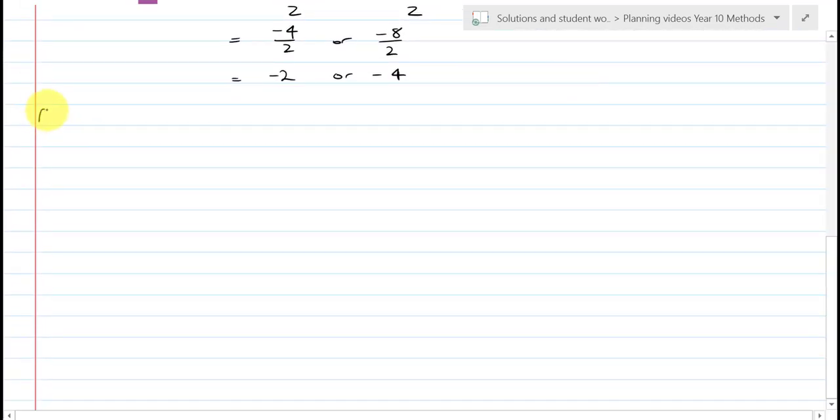So, let's have a look at a second example. And this one won't be so nice. So, we have 3x squared, plus 13x, minus 10, is equal to 0. And so, a is equal to 3, b is equal to 13, and c is equal to negative 10.